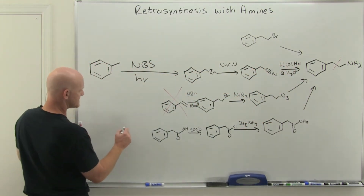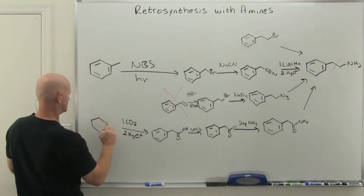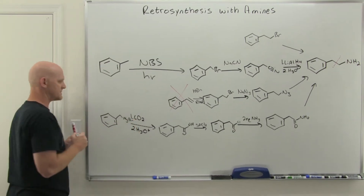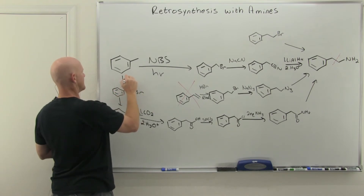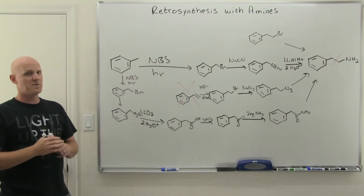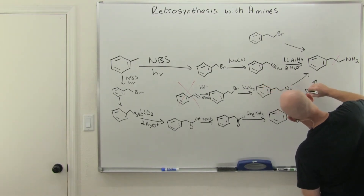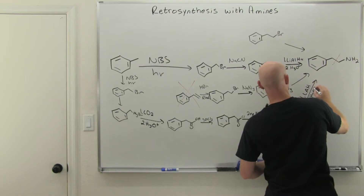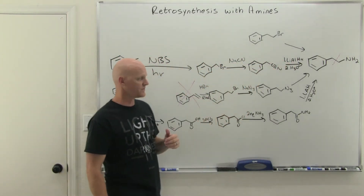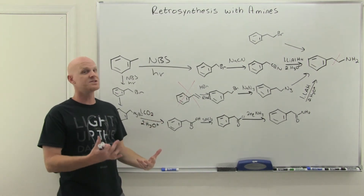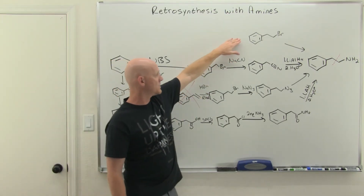We could also do Grignard addition to CO2: make the Grignard from the corresponding alkyl halide — which we can get via NBS — then add CO2, make the acid chloride with SOCl2, react with ammonia to get the amide, and finally reduce with LAH. That's one-two-three-four-five-six steps, much longer than our first synthesis. Comparing everything, the nitrile route is clearly the best: just three steps through NBS bromination, SN2 with NaCN, and LAH reduction.